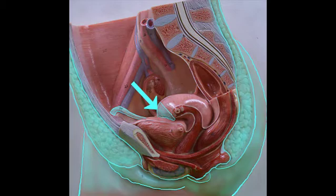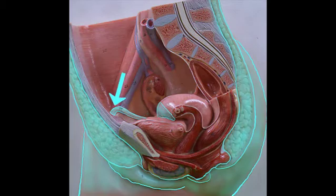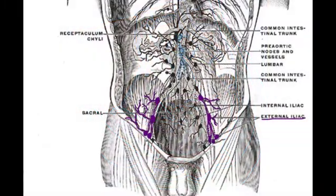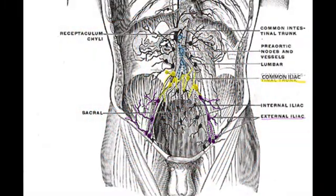An additional organ that drains into these nodes that you might not think of is a portion of the uterus. Lymph from the lateral horns follows the round ligament of the uterus to drain into the superficial inguinal nodes. From these nodes, the lymph then drains deep, following the external iliac pathway back to the lumbar trunks.